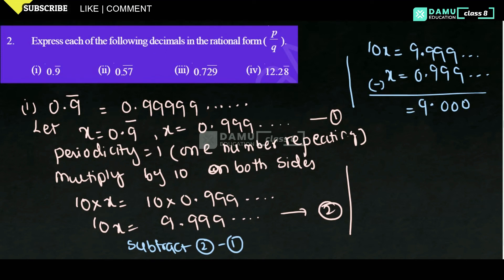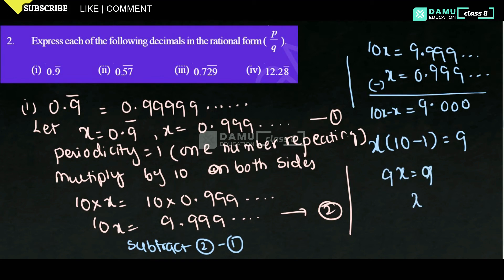So, 10x minus x — taking x common — 10 minus 1 will be equal to 9. Then 9x will be equal to 9. Then x will be equal to 9 by 9, which equals 1. So x will be equal to 1, or you can keep it in the format of 1 by 1.